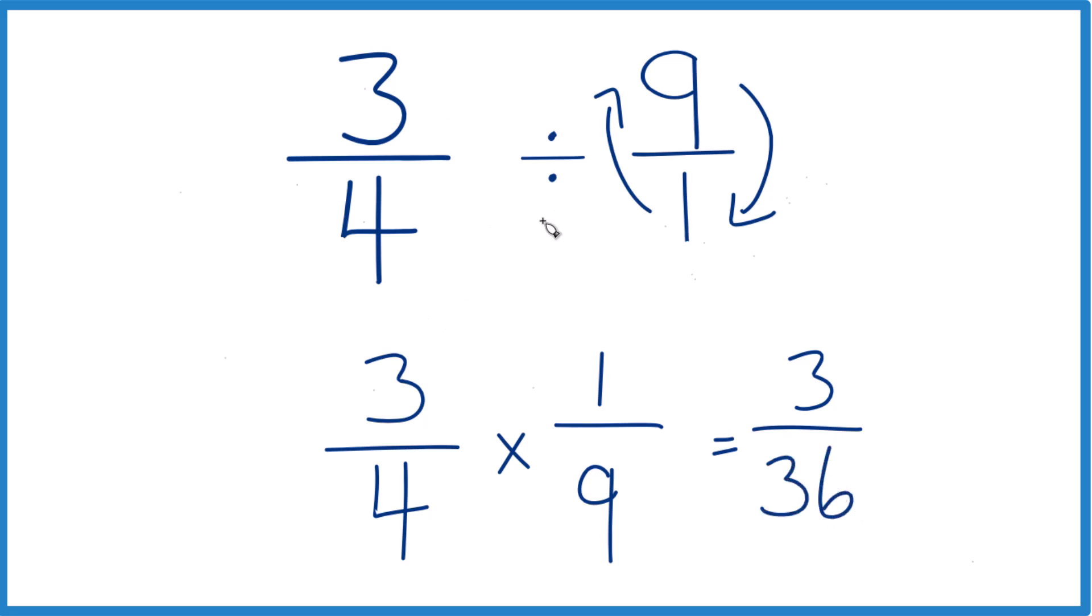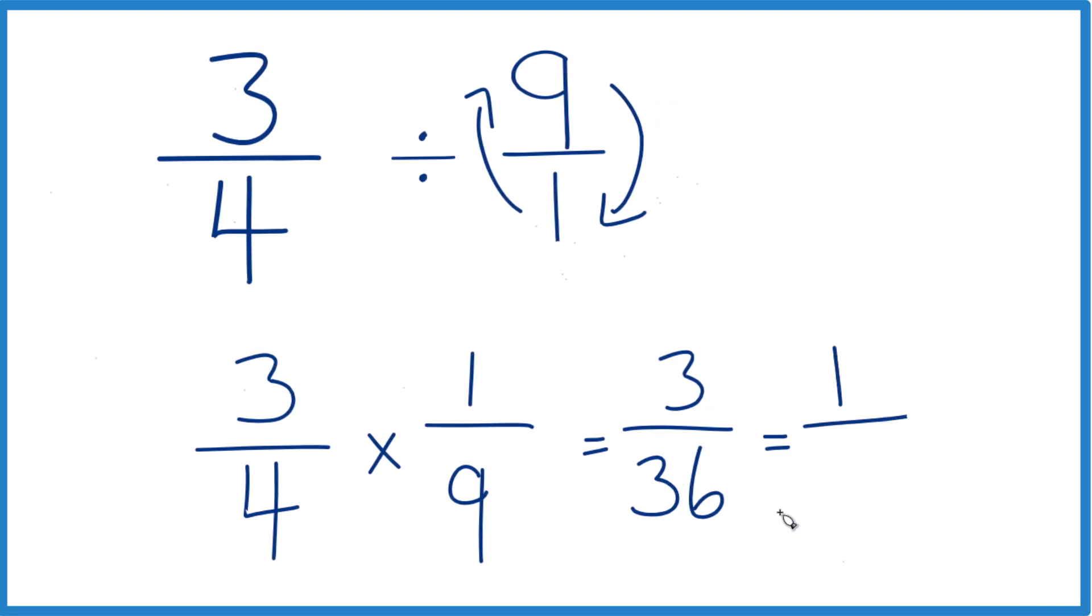So 3 fourths divided by 9 is 3/36. But both of these numbers are divisible by 3, so let's simplify it. 3 divided by 3 is 1, and 36 divided by 3 is 12.